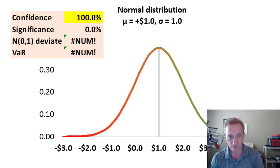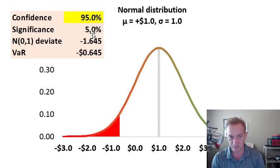So I'm now going to change the confidence level from 100% so I can answer the question, what is the 95% value at risk? And that's probably the most popular calibration here for confidence level. So if my confidence is 95%, one minus my confidence is the one-tailed significance level. And my standard normal deviate is -1.645.